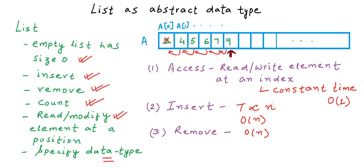Adding an element at the end takes constant time if the array is not full, but if the array is full we must create a new array of double the size and copy all elements over — so in the worst case adding is also O(n). The good thing with this implementation is constant-time access to any index. The downsides are: insert and remove are costly; if the list grows and shrinks a lot, we repeatedly create new arrays and copy elements; and much of the array may be unused at any time.